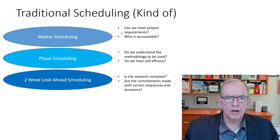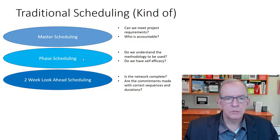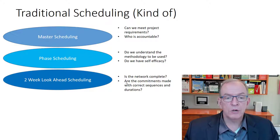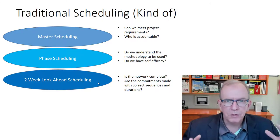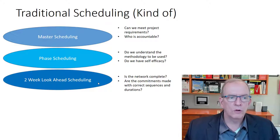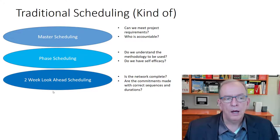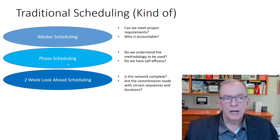Can we meet the project requirements? Who is accountable? Do we understand the methodology to be used? Do we have self-efficacy and confidence that we can actually meet these dates? Is the network complete? Do we have everybody in place? Are commitments made, and have we made adjustments to sequencing and optimized the order of work? Because we're going to have a lot more detail two weeks out than we will at three months out, and a lot more detail at three months out than at the end of the project.